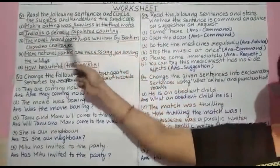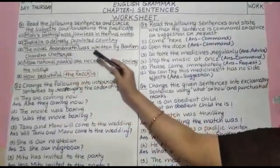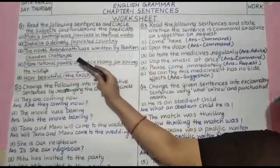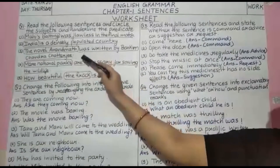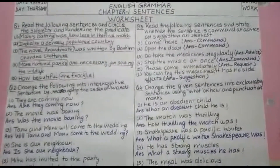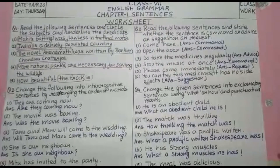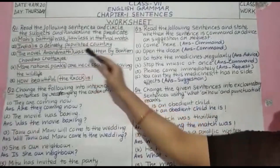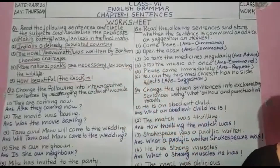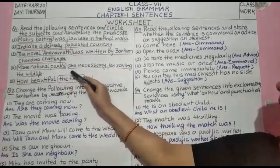Next: 'The novel Anandmat was written by Bankim Chandra Chatterjee.' In this sentence, 'the novel Anandmat' is the subject because the sentence is showing or telling something about the novel. 'Was written by Bankim Chandra Chatterjee' is the predicate, as it gives us information about the novel Anandmat.